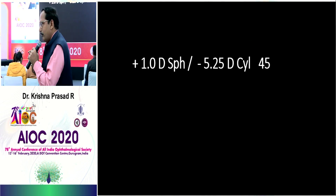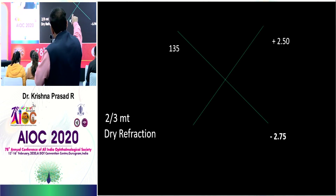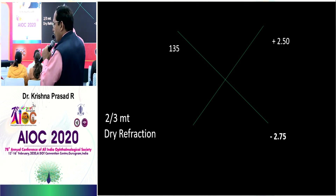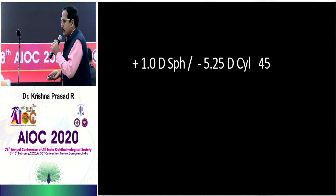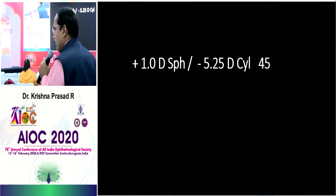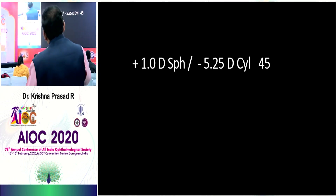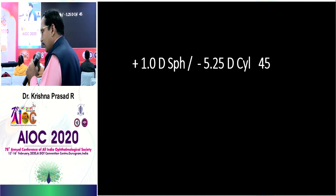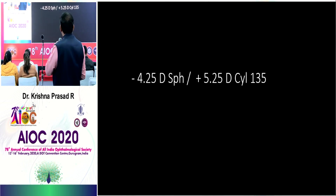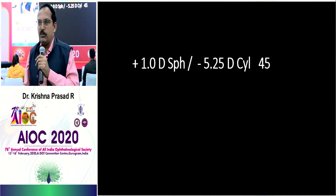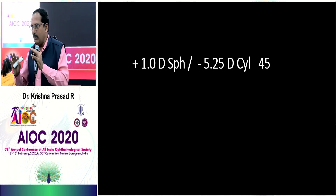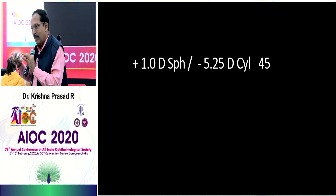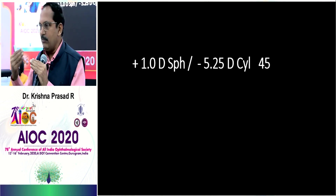What kind of astigmatism is this? It's oblique astigmatism — not with or against the rule because it's at 45. It's also mixed astigmatism. Can anybody transpose this? Transposition is putting the same refractive acceptance in a different format. It doesn't make any optical difference — the spectacle lens being ground is the same. Only the representation is different. To transpose: take the algebraic sum of sphere and cylinder. Plus 1 plus minus 5.25 equals minus 4.25. Put that as the new sphere, keep the cylinder value but change the sign to plus 5.25, and change the axis to the perpendicular — 135. That is the transposed form.